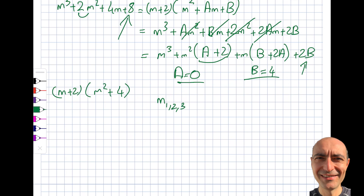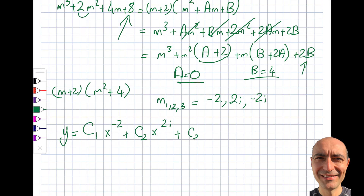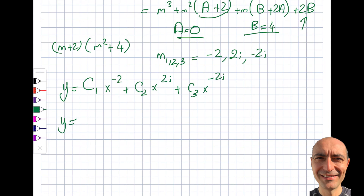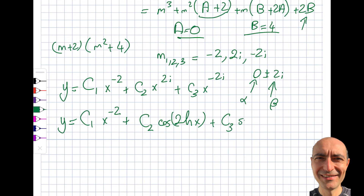So the roots are: m = −2 (already found), and from m²+4 = 0 we get m = +2i and m = −2i. Writing the general solution: y = C₁·x^(−2) plus, for the complex roots where α = 0 and β = 2, we get x^α[C₂·cos(β·ln x) + C₃·sin(β·ln x)] = C₂·cos(2 ln x) + C₃·sin(2 ln x).